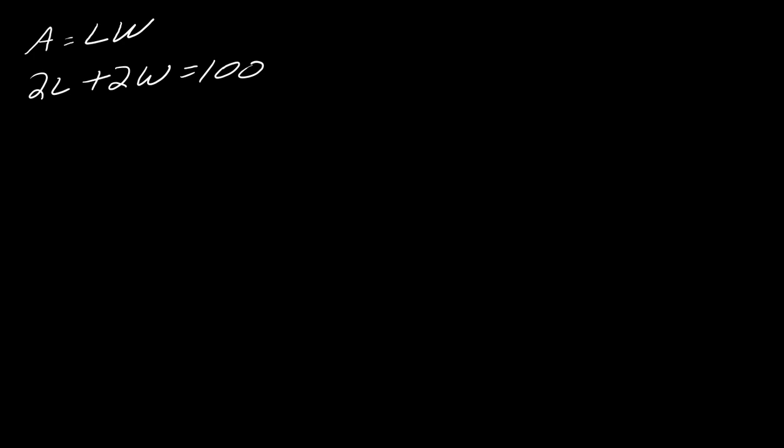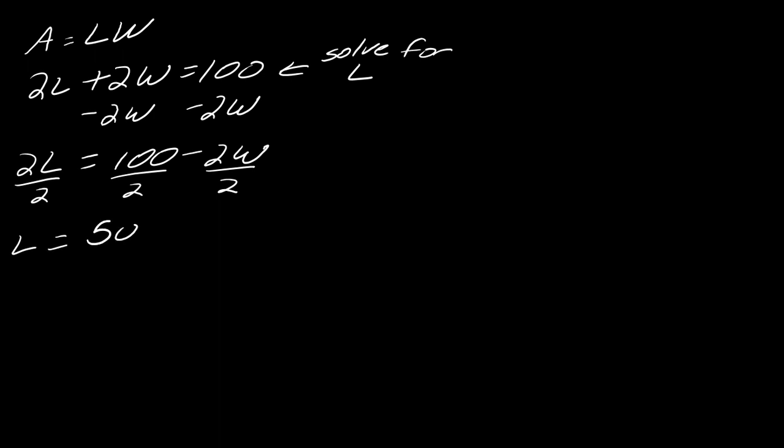And then that might actually help me cut down how many letters I have. So I'm going to solve for one of the letters in this equation just because there are fewer letters in the second than in the first. So let's go ahead and just solve for L. You could have done this for W. It doesn't matter. I'm just making a choice here. So if I want to solve this for L, first I'd have to subtract 2W. So I get 2L equals 100 minus 2W. And then I'd divide everything by 2 to get L equals 50 minus W.